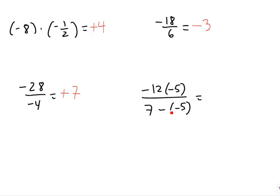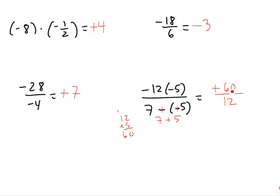This next example has order of operations with a big fraction bar. First we figure out what the whole number on top turns into, then the number on the bottom, and then we divide. On top: negative twelve times negative five — two negatives multiplied together turns positive, and twelve times five is sixty. In the denominator, we have subtraction: a minus minus becomes plus, so this is really seven plus five, which is twelve. Now sixty divided by twelve goes back to five.